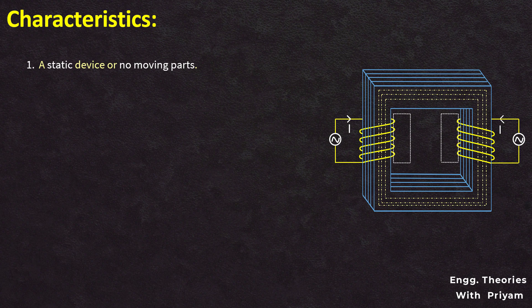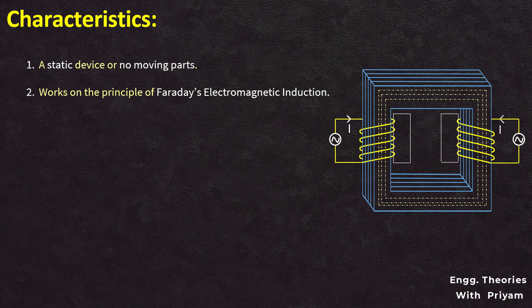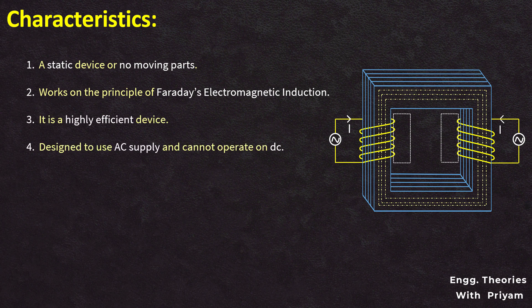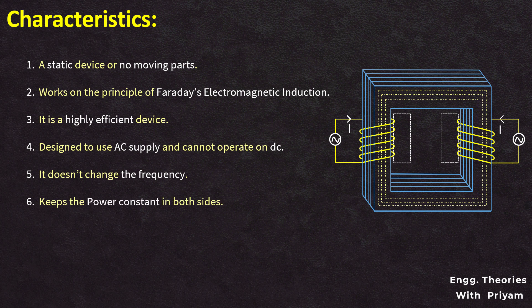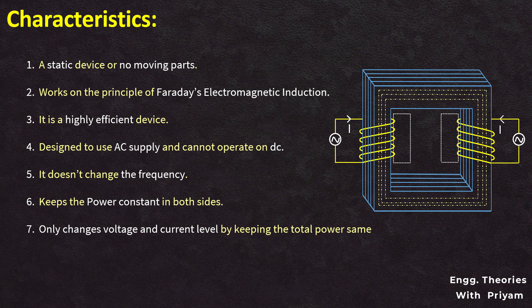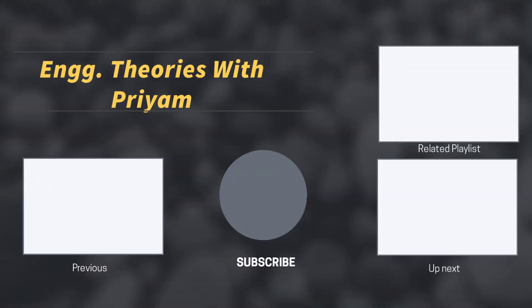Key characteristics of a transformer: it is a static device with no moving parts; it works on the principle of Faraday's electromagnetic induction; it is a highly efficient device; it is designed to use AC supply and cannot operate on DC; it cannot change frequency; it keeps the power constant on both sides, only changing voltage and current levels; and it is electrically isolated but magnetically linked. This concludes our discussion for this lecture. If you have any questions, feel free to post them in the comment section, and don't forget to hit the subscribe button.